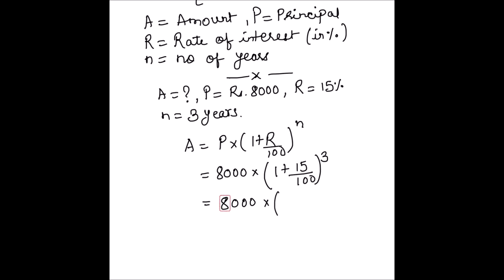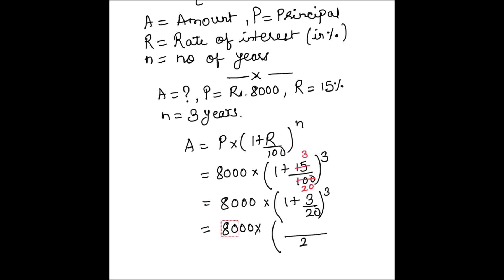So this is 8000 times (1 plus 15/100). Now 15 and 100 can be simplified — both have a common factor of 5, giving us 3/20. So the expression becomes 8000 times (1 plus 3/20) whole cubed. Using 20 as the LCM, this gives us (20 plus 3) upon 20, whole cubed.